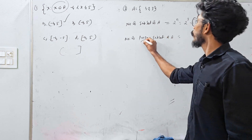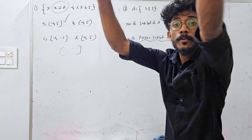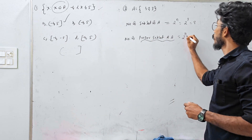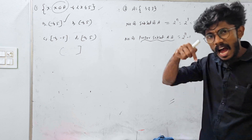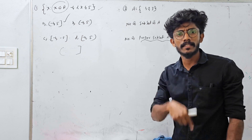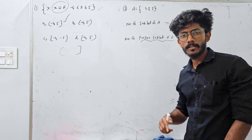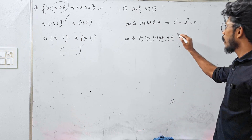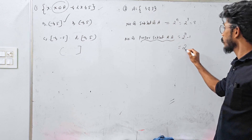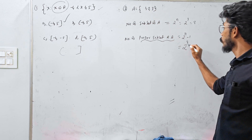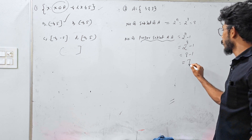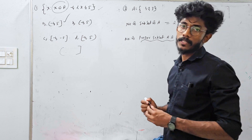Number of proper subsets of A. Proper subsets formula: 2 raised to N minus 1. This is the concept of a set. A set of proper subsets equals 2^N minus 1. So, for 3 elements: 2 raised to 3 minus 1 equals 8 minus 1 equals 7 proper subsets.